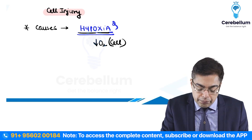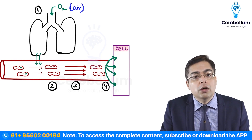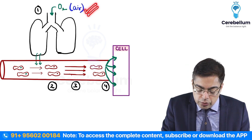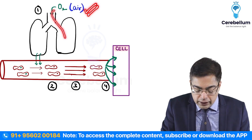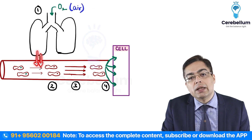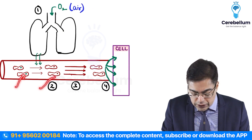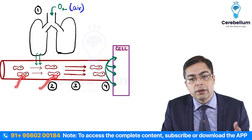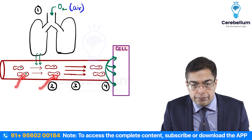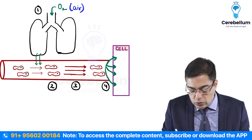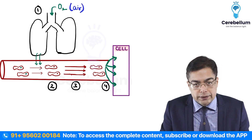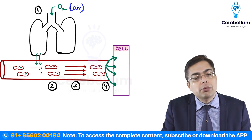Understanding this requires recalling normal physiology. There are four important steps by which cells utilize oxygen. Step one: air contains around 21% oxygen, which enters the lungs. Step two: oxygen diffuses from the lungs into blood vessels and combines with hemoglobin in RBCs, forming oxygenated hemoglobin. Step three: oxygenated blood is transported to cells and tissues. Step four: oxygen diffuses into the cells and is utilized for metabolic processes.